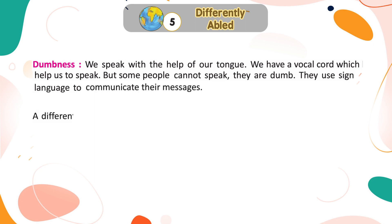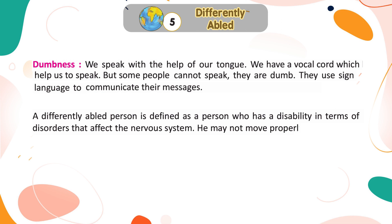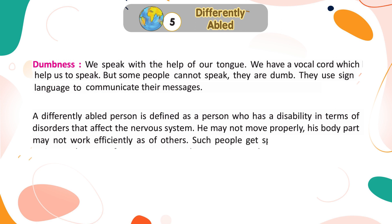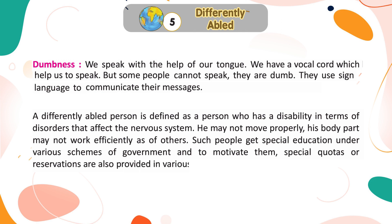A differently abled person is defined as a person who has a disability in terms of disorders that affect the nervous system. He may not move properly, and his body parts may not work as efficiently as others. Such people get special education under various government schemes, and to motivate them, special quotas or reservations are also provided in various government departments.